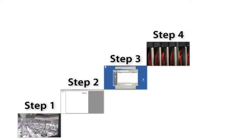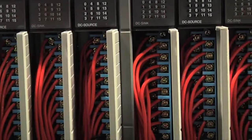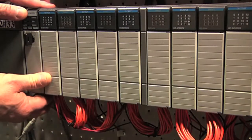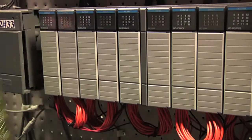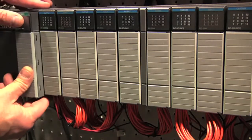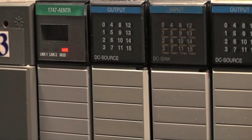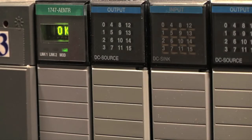Step 4. Mount and wire the compact logic system and replace the SLC first slot modules — that is the SLC processor or communication adapter module — with the SLC Ethernet adapter, the 1747AENTR. Utilizing this module allows you to retain your existing SLC-IO and preserve existing field wiring, while allowing your SLC-IO chassis to be controlled from your new compact Logix controller.